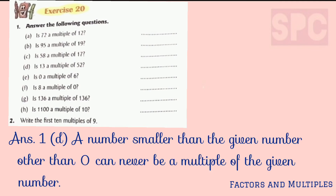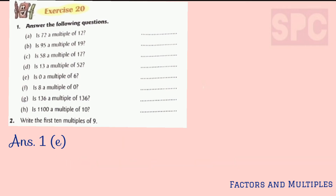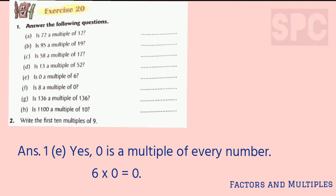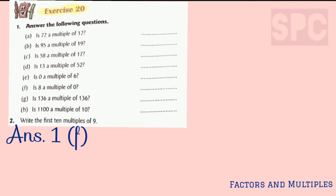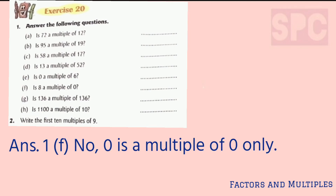Part d: is 13 a multiple of 52? A smaller number can never be a multiple of a bigger number, so we write no. Part e: is 0 a multiple of 6? 6 zeros are 0, so 0 appears in the table of 6 — yes, 0 is a multiple of 6. Part f: is 8 a multiple of 0? No — when you multiply 0 with any number you get 0 only, so 0 is the only multiple of 0. We write no.